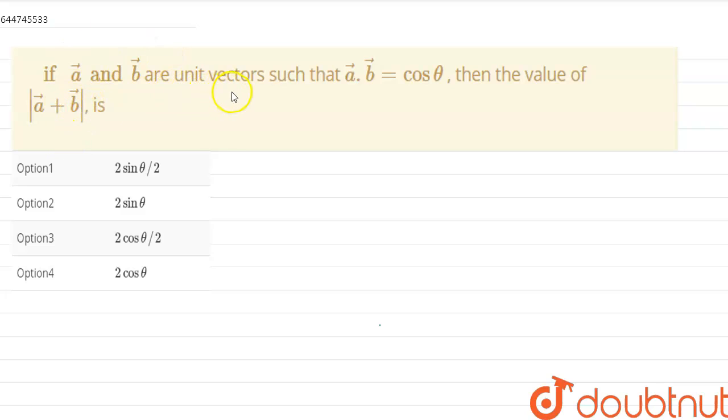If a vector and b vector are unit vectors such that a dot b is cos theta, then the value of mod of a plus b vector is. So see, the magnitude of a vector will be one.